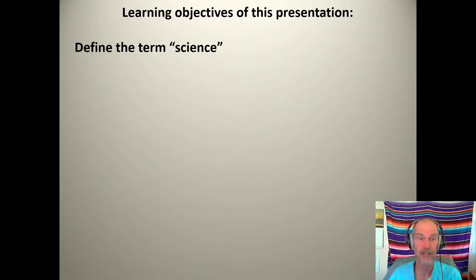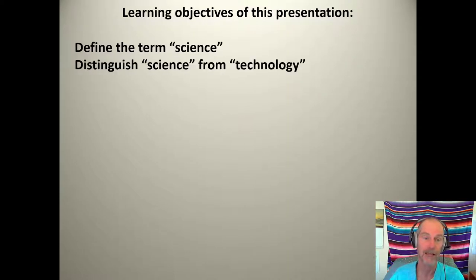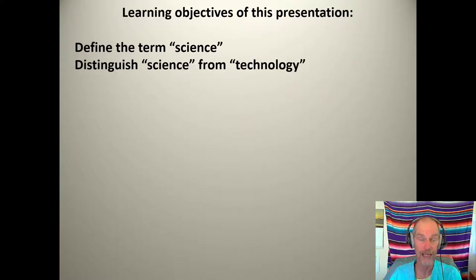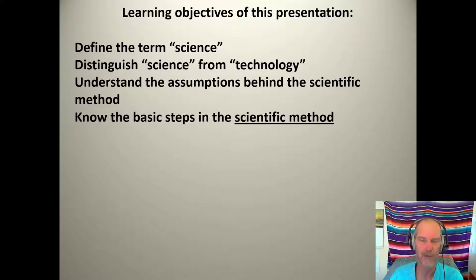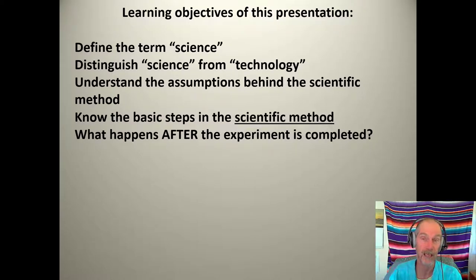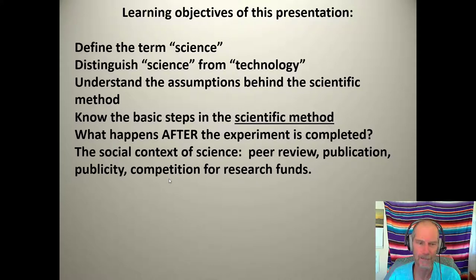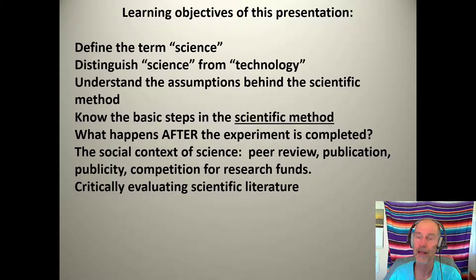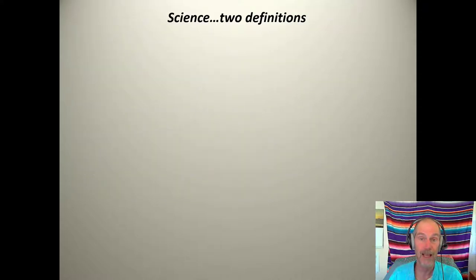Learning objectives of this presentation: I want to define the term science and then distinguish science from technology — they're often conflated. Understand the assumptions behind the scientific method and know the basic steps in the scientific method. Then, what happens after the experiment is completed? Scientists don't stop there. I also want to talk about the social context of science: peer review, publication, publicity, and competition for research funds. And then, critically evaluating scientific literature — we started with critical thinking, so let's apply it.